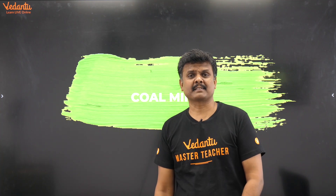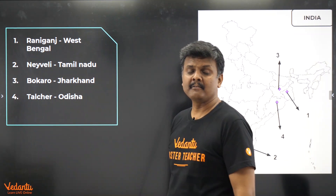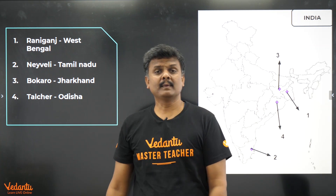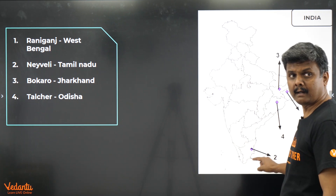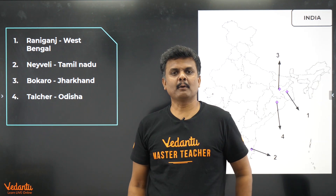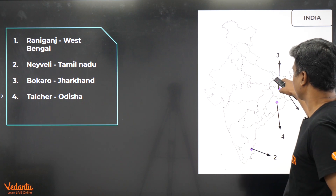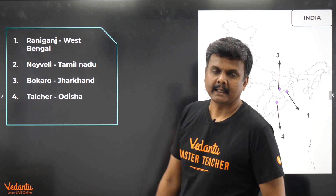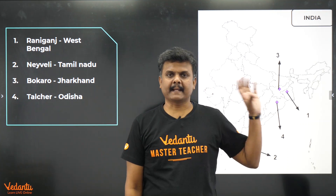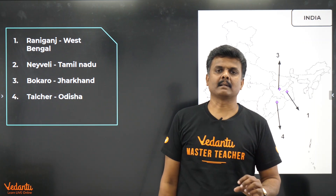Coal mines are a very important energy resource. Number one: Raniganj in West Bengal. Number two: Neyveli in Tamil Nadu. Number three: Bokaro in Jharkhand — the same location as the steel plant. Number four: Talcher in Odisha. So the four major coal mine regions are Raniganj, Neyveli, Bokaro, and Talcher.